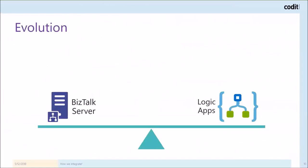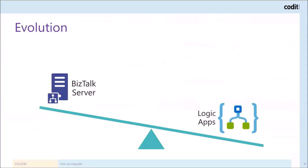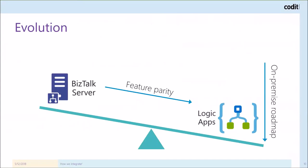They want to serve customer needs both on premises, in the cloud, and in hybrid scenarios. The focus is more and more on Logic Apps and Azure Integration and a little bit less on BizTalk Server. The product teams are working hard to achieve feature parity — quite a lot of BizTalk features like the Business Rules Engine and some accelerators are not yet available in Logic Apps. They are also working on an on-premises roadmap for Logic Apps. Thanks to the Integration Service Environment (ISE), Logic Apps can already integrate with your virtual network and connect through a site-to-site VPN or an ExpressRoute to your on-premises systems.